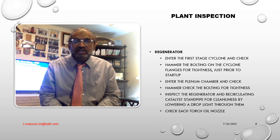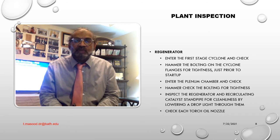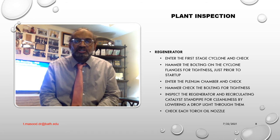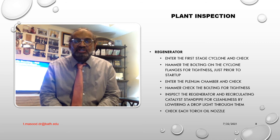E — inspect the regenerator and recirculating catalyst standpipe for cleanliness by lowering a drop light through them; remove the light and check that the slide valves move smoothly from fully open to fully closed position when operated from the control room. Check each torch oil nozzle to ensure: number one — that the slots in the inner and outer jets are lined up horizontally; number two — that the outer nozzle is recessed one-quarter inch (6 mm) from the regenerator wall; number three — that the spray lenses have been marked on the outside of the vessel so that they may be withdrawn and reinserted in the correct position when the unit is in operation.